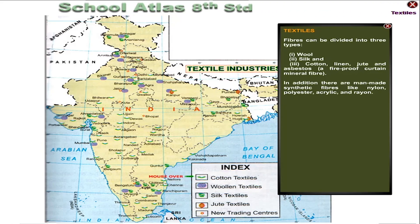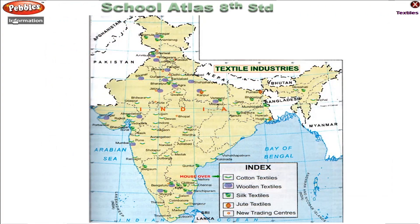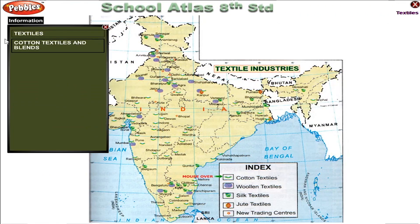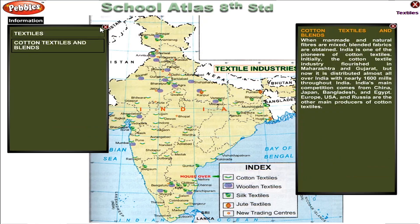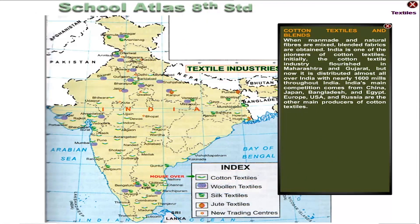In addition, there are man-made synthetic fibres like nylon, polyester, acrylic and rayon. When man-made and natural fibres are mixed, blended fabrics are obtained.